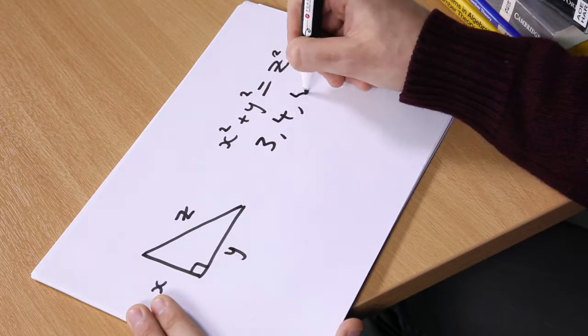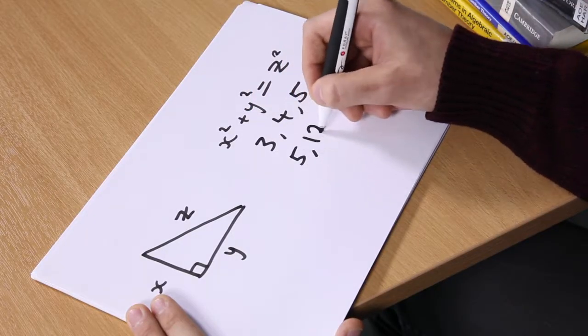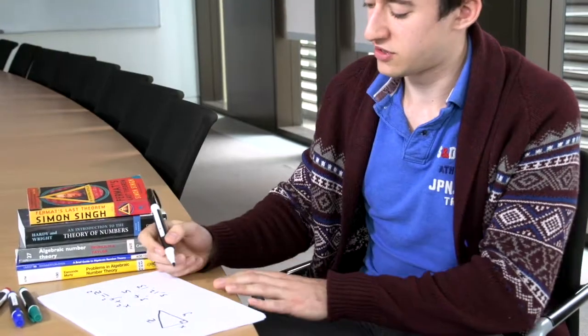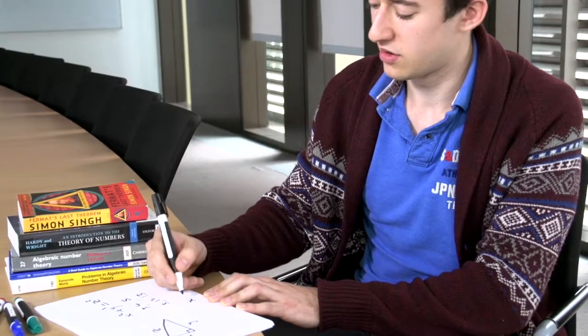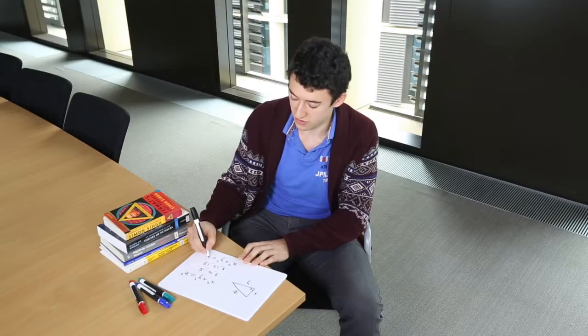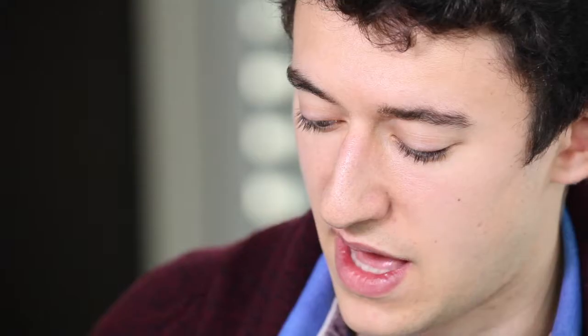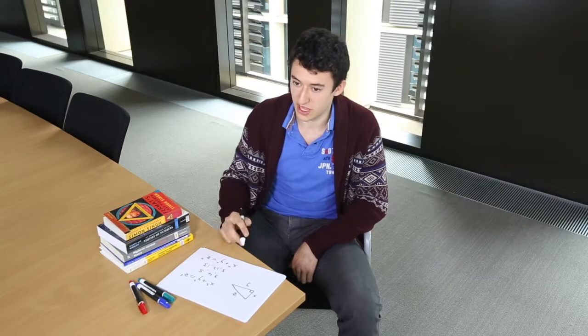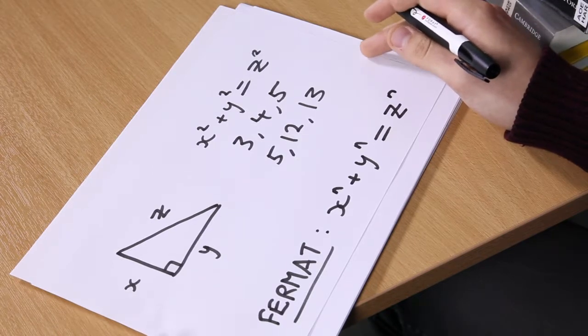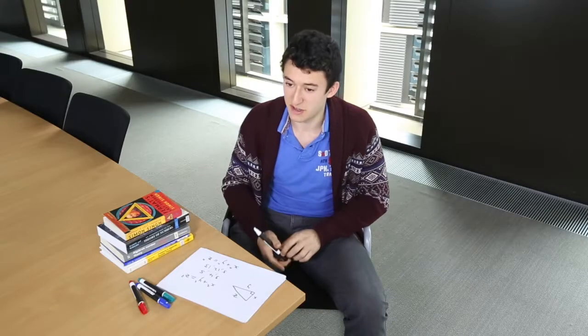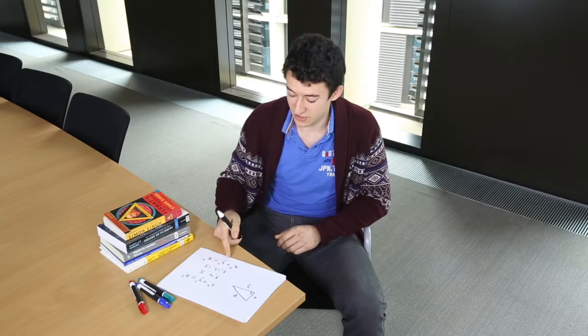3, 4 and 5 work or 5, 12 and 13 work and what Fermat's Last Theorem does is it changes the number 2 up here to a number bigger than 2 which we call n and what it supposes is that this equation when n is bigger than 2 doesn't have any solutions. No matter how hard you look for x, y and z or n, there's going to be an infinity of possibilities, this equation would never be true.